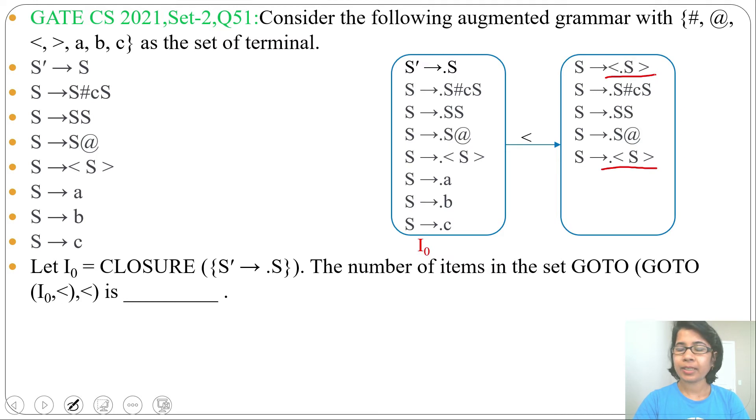Dot is after less than means we have already visited this symbol. Dot is before less than means we have not visited anything. Then S derives dot a, S derives dot b, S derives dot c. And we will assign one state name I2.